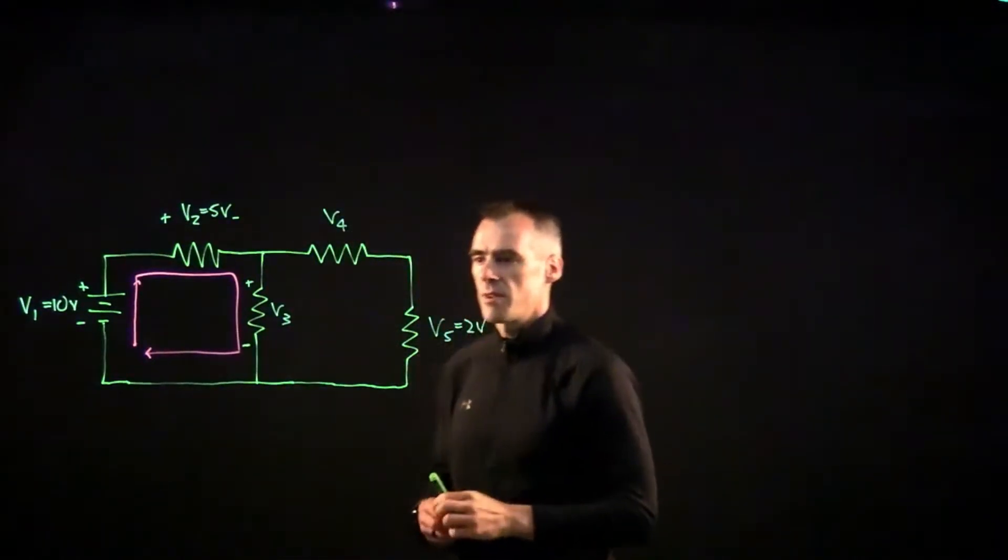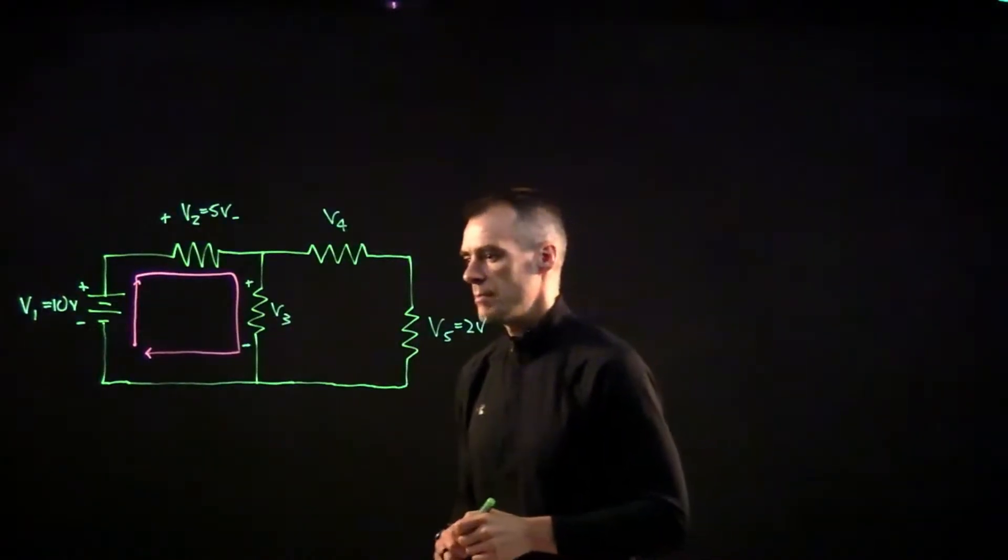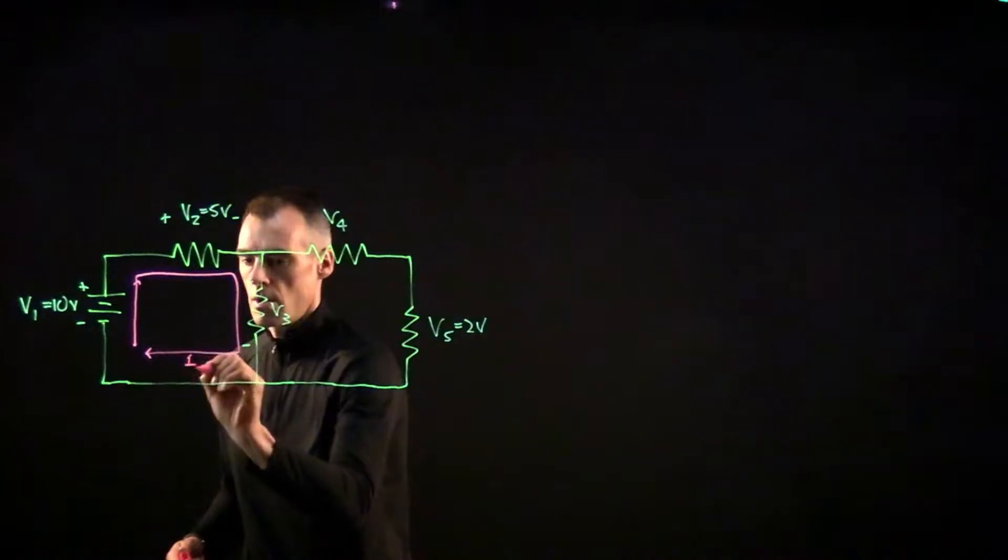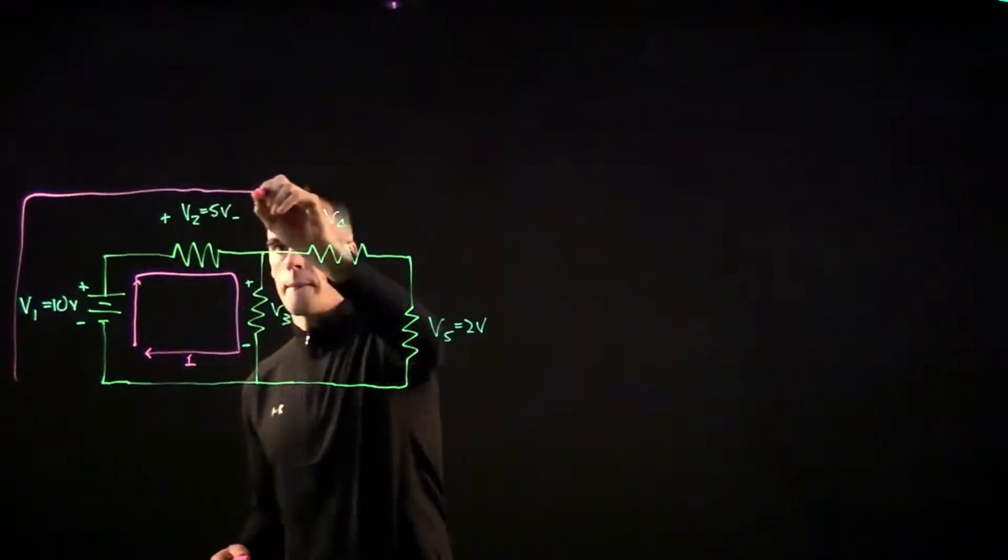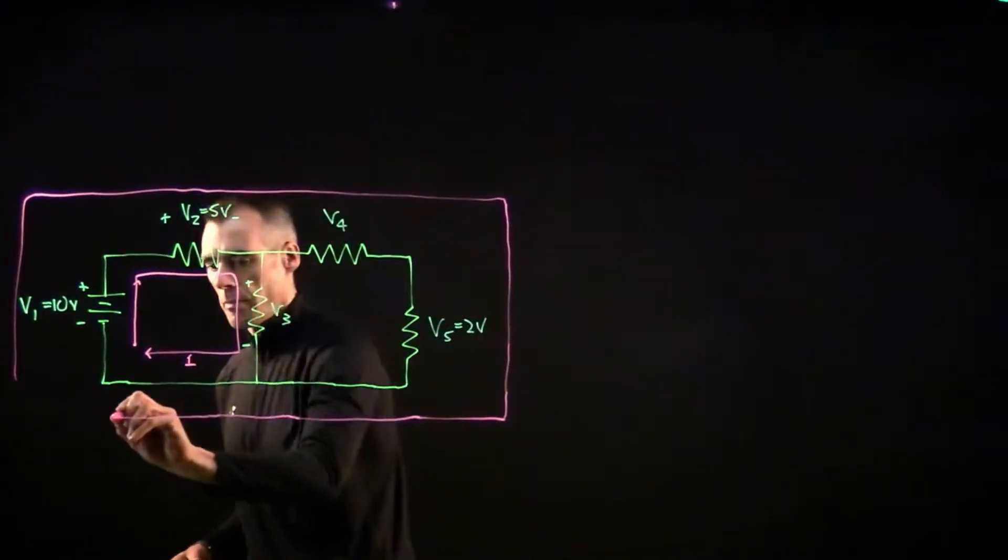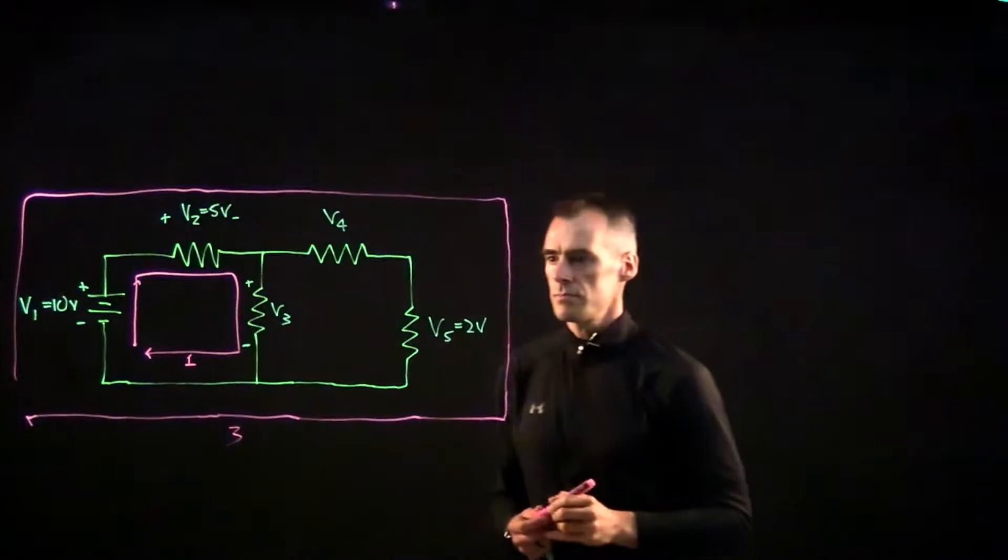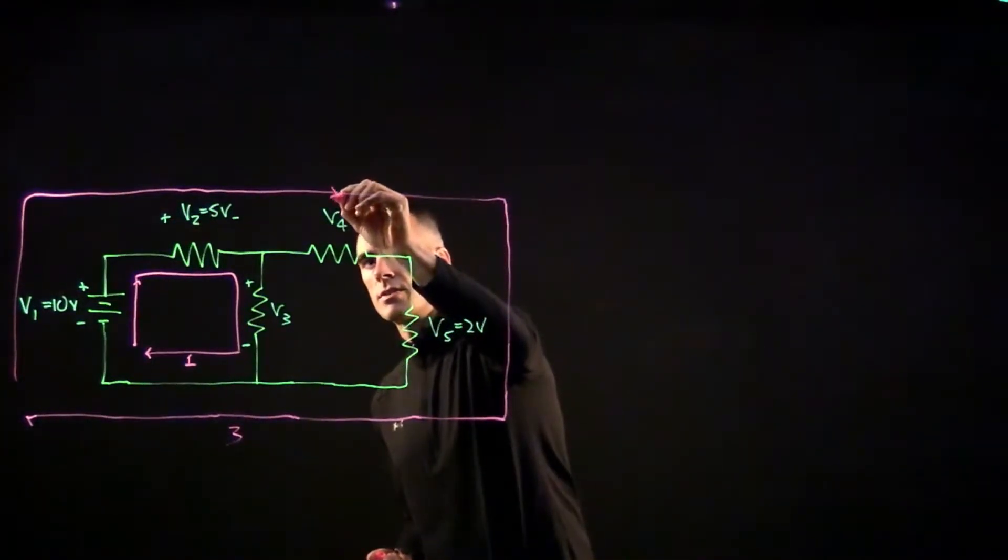Let's call this loop one right here. And let's imagine a bigger loop around here. We'll call this loop three. So the loop's going this way, the current's going this way.